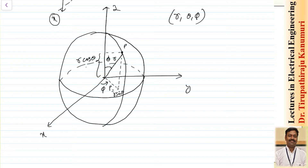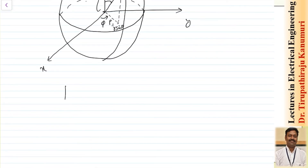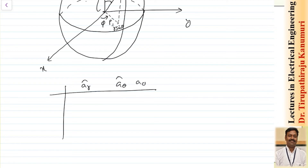Now, to get the conversion table between the cylindrical and spherical coordinate systems, let us draw a table with a_r, a_theta, a_phi on one axis, and a_rho, a_phi, a_z on the other. We will start with the cylindrical-to-spherical conversion since it is easier.